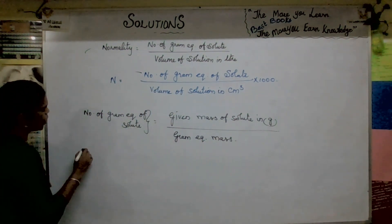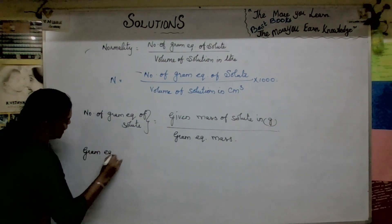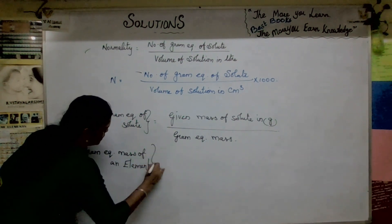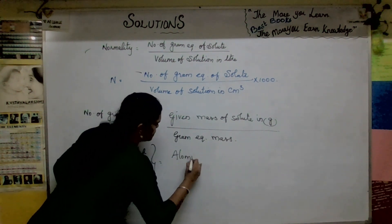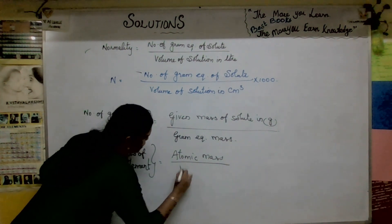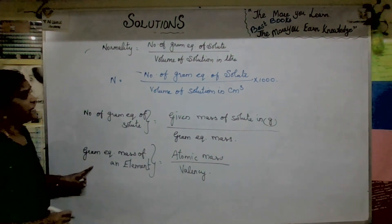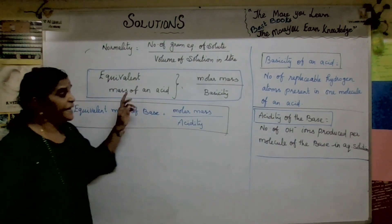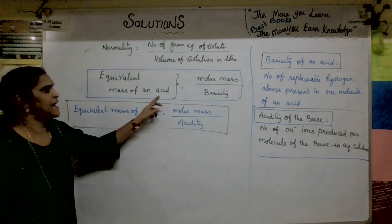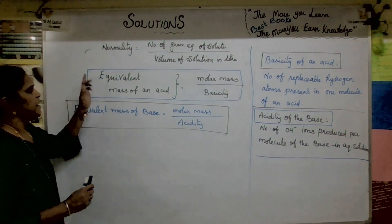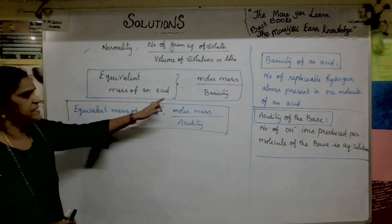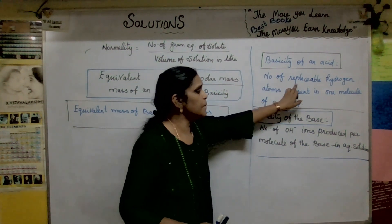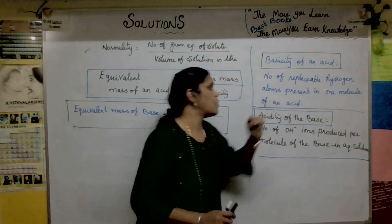Gram equivalent mass of an element equals atomic mass divided by valency. Equivalent mass of an acid equals molar mass divided by basicity. Basicity of an acid is the number of replaceable hydrogen atoms present in one molecule of the acid.